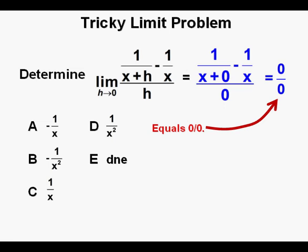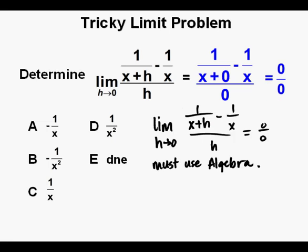And it's here that Ms. Etheridge points out 0 over 0 must use algebra, and that's her actual writing. If we come up with 0 over 0, it's usually that more work is needed.